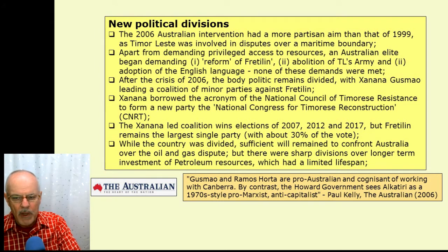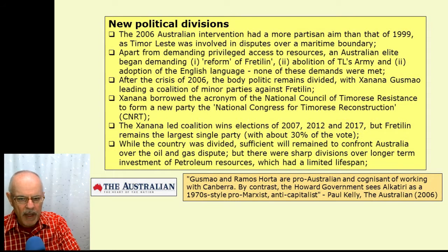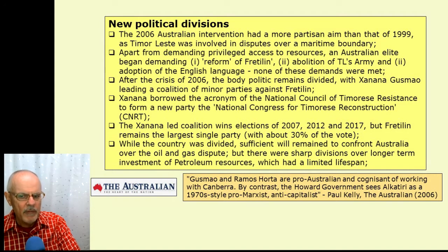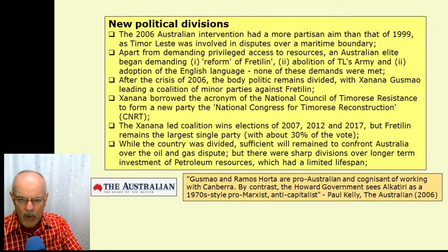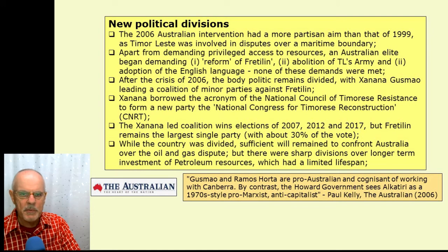Xanana borrowed the acronym CNRT of the National Council of Timor-Leste's Resistance to form a new party called the National Congress for Timor-Leste's Reconstruction, borrowing on the goodwill of that name. But in this case it wasn't a national unity organisation — it was a party set up specifically to oppose Fretilin. A senior Australian journalist from the Murdoch Media stable, Paul Kelly, said that Xanana Gusmão and Ramos-Horta the then foreign minister were 'pro-Australian and cognizant of working with Canberra,' while the Howard government saw Alkatiri as a '1970s-style pro-Marxist anti-capitalist' — because he wanted state-controlled oil and gas resources and public institutions to support agriculture.